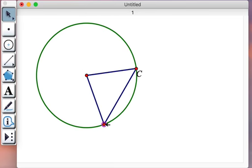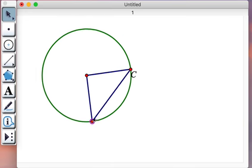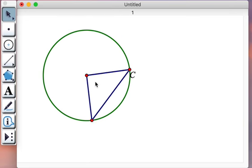And here, as promised, is a triangle that is always isosceles, thanks to the new drag merge capabilities of the new Mac Sketchpad.